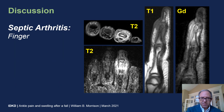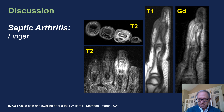Another example: septic arthritis of the finger. Notice that there's not a large joint effusion here because there's not a large joint capacity. In small capacity joints, the fluid from septic arthritis often decompresses — it can decompress into the adjacent soft tissues, into a tendon sheath, into a bursa, or elsewhere.